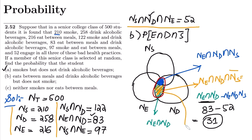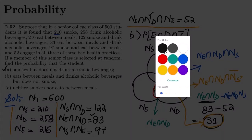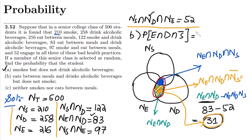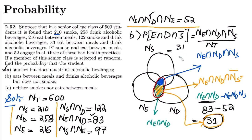Subtracting: 83 − 52 = 31. So the number of students in that region, shown in yellow, is 31. The probability is therefore N(E ∩ D ∩ S') divided by the total number of students, which is 31/500. That is the solution to part B.